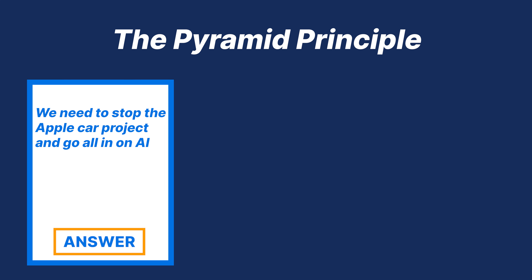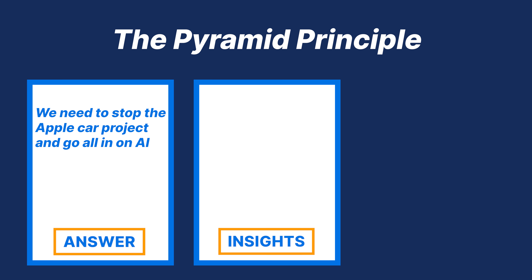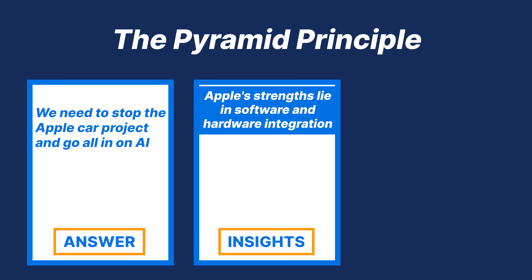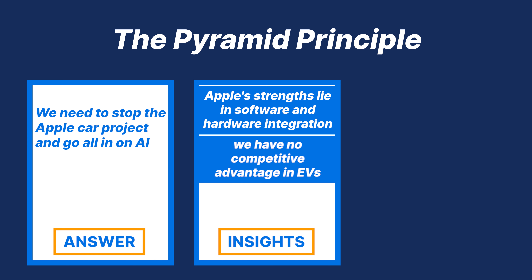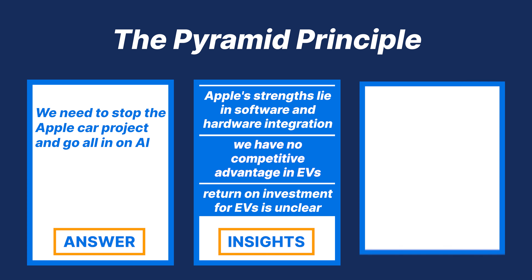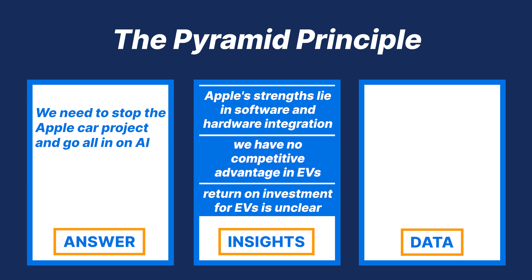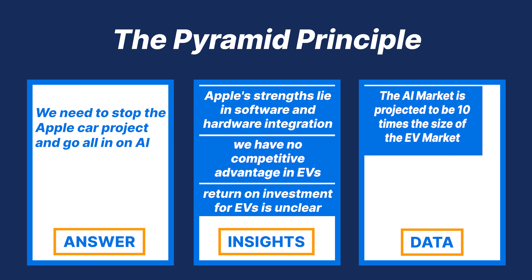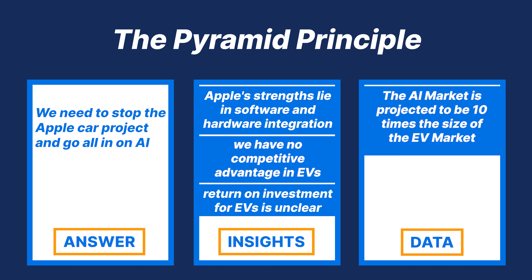Rather than going from data leading to conclusion, the pyramid principle flips the order of these slides. We lead with the answer: 'We need to stop the Apple car project and go all in on AI.' Then showcase the supporting arguments: Apple's strengths lie in software and hardware integration; we have no competitive advantage in EVs; the return on investment for EVs is unclear.